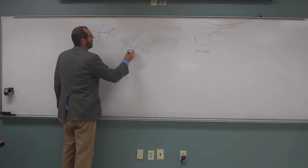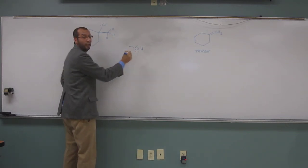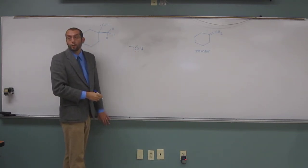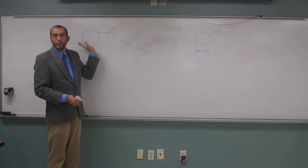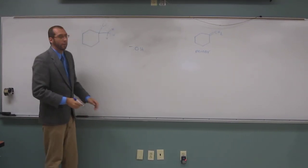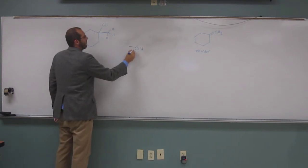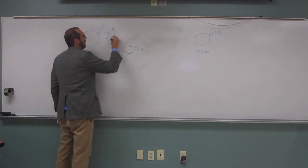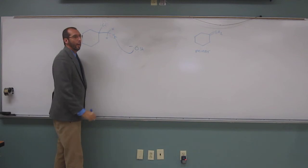So anyways, what's going to happen, you start your arrows always at your lone pairs or your pi bonds. You don't have pi bonds here, so the lone pairs are going to start. So, where are we going to start, from there, it's going to deprotonate the hydrogen.